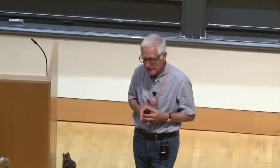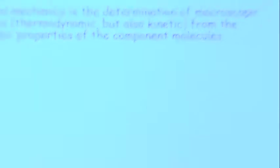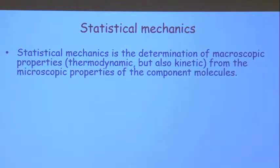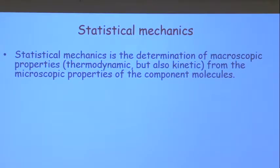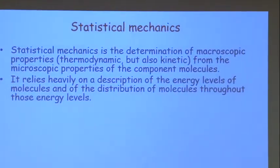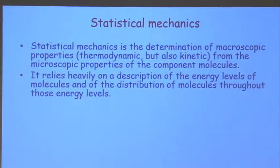Now let's look at statistical mechanics. Statistical mechanics is the determination of macroscopic properties — thermodynamic but also kinetic — from microscopic properties of the component molecules. The spacings of the energy levels of the molecules is important in determining their thermodynamic quantities, and statistical mechanics allows us to calculate those properties. It relies heavily on a description of the energy levels of the molecules and the distribution of the molecules throughout these energy levels.